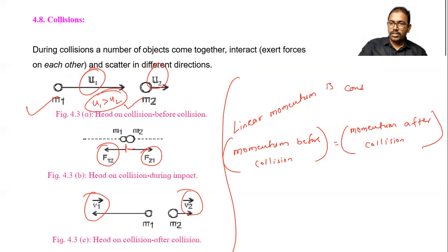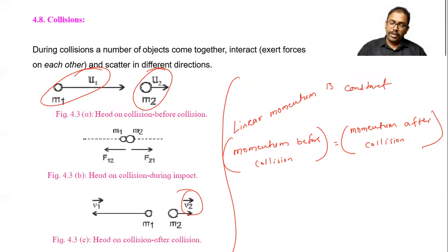So this momentum is constant. Now momentum before collision. So the total momentum we are talking here. You can see here this momentum of this body is mass into velocity and this mass into velocity. So momentum before collision is m1 u1 plus m2 u2. This is total momentum before collision.